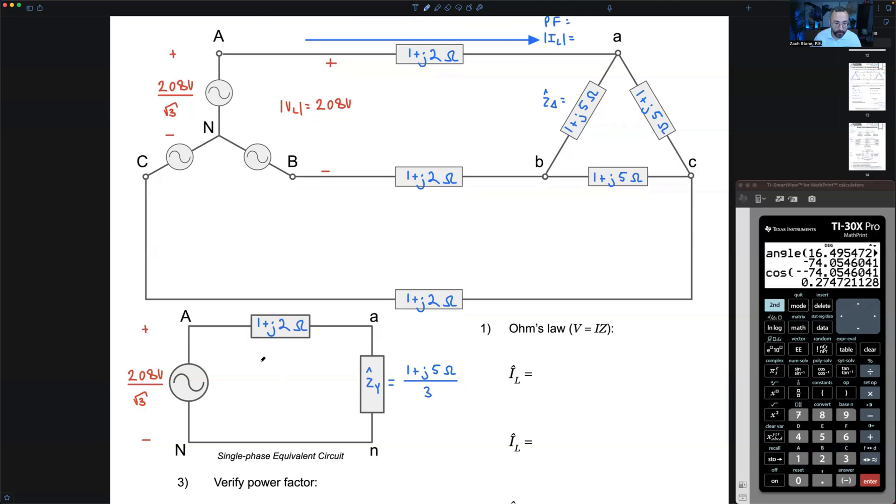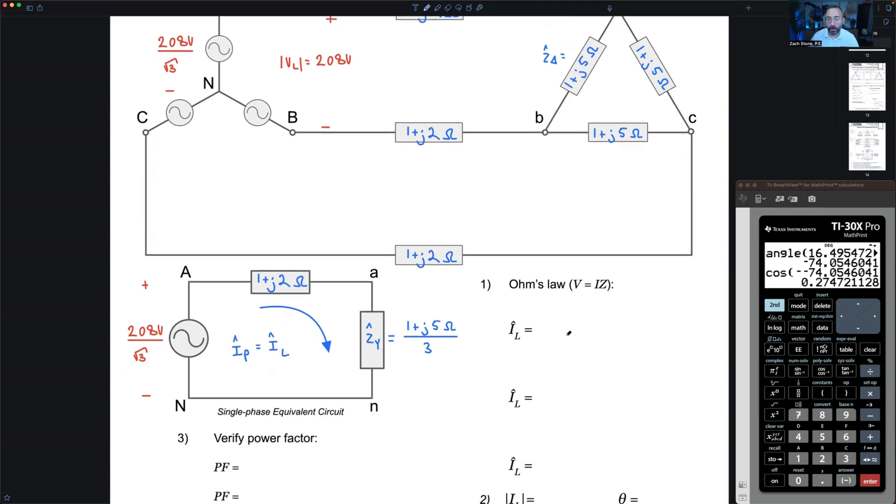It's all set up. Here's my current in my single-phase equivalent circuit. I always call it I-line to remind myself that's the magic. Ohm's law, V equals I times Z. I equals V over Z. This is a complex current, so I need to use my complex voltage and complex impedance.